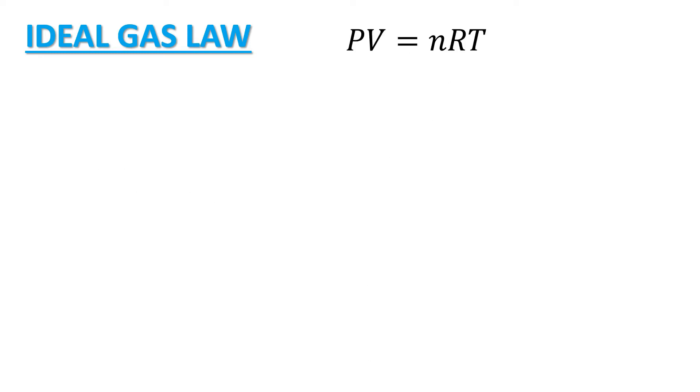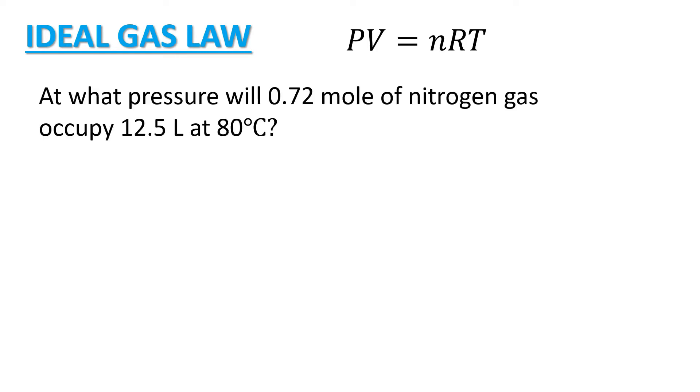So let us now solve problems involving the Ideal Gas Law. At what pressure will 0.72 mole of nitrogen gas occupy a volume of 12.5 liters at 80 degrees Celsius? So we are asked to solve for the pressure of the gas. The given are the number of moles of the gas, which is equal to 0.72 moles.